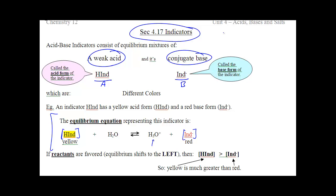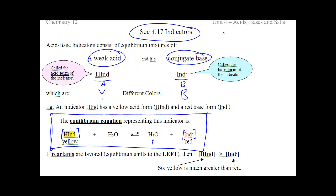What makes indicators so special is that the weak acid and the conjugate base have different colors. This could be yellow, and this could be blue. So whatever form is dominant, that's the color that you see. If you have more HIND, you will be yellow. If you have more IND minus, you will be blue. An indicator is an equilibrium mixture between a weak acid and its conjugate base that are different colors.